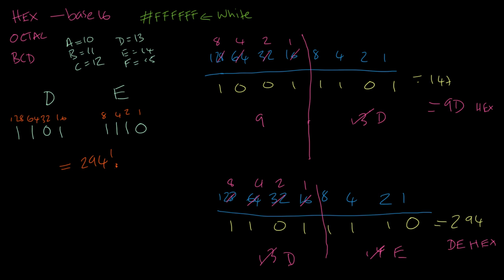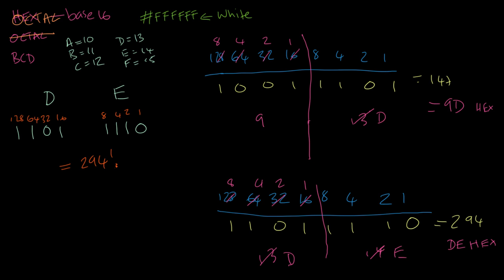Let's take a look at octal. Octal works exactly the same way as hex. The only difference is it's a base-8 number, and instead of splitting it into groups of 4 bits, we're going to split them into groups of 3. So let's take our number again, 294, which was 11011110.